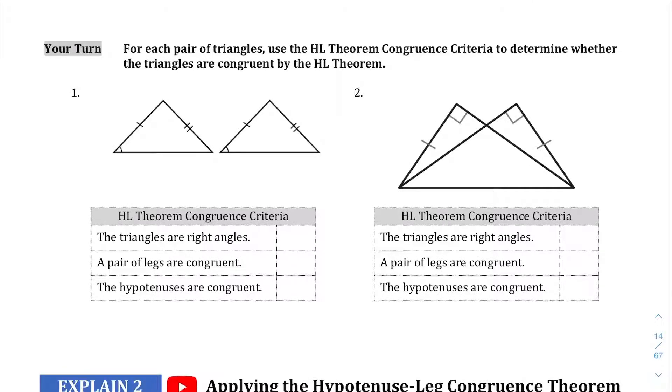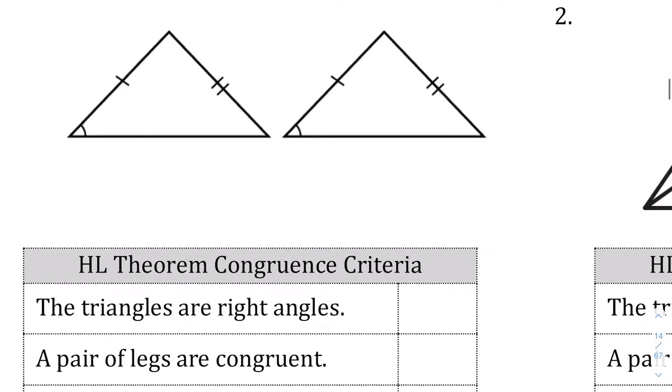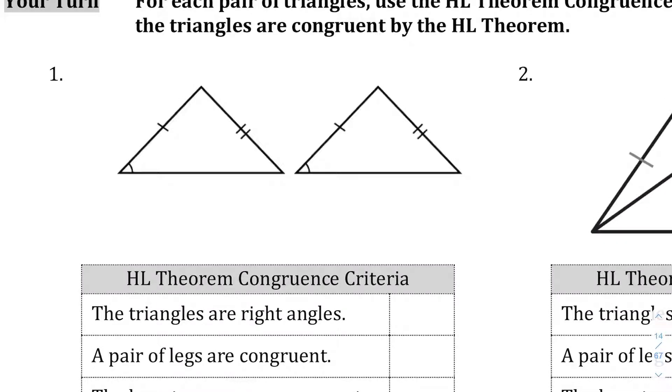Let's jump into the Your Turn questions here. We'll look at question one first. So we're asked to determine whether or not these fit the profile for hypotenuse leg theorem. So we're just going to say yes or no, basically, whether or not it fits the bill. So this first statement here, the triangles are right triangles. Now, if we look at these two triangles, neither of them have that little square in the corner, so we cannot conclude that. So I'm going to say no. So right off the bat, we can't use hypotenuse leg. We can say, however, that the pair of legs are congruent. That has one hash mark. Those have two hash marks, so we can say yes to that.